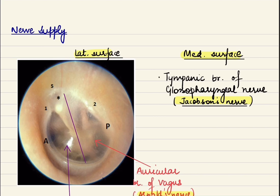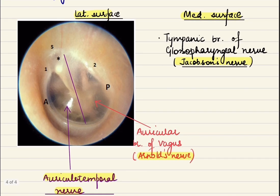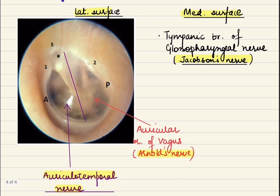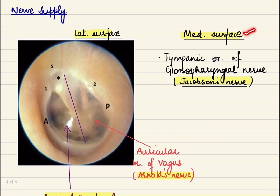Lastly, the nerve supply of the tympanic membrane. Both the lateral and medial surfaces have different nerve supplies. The lateral surface nerve supply is similar to the external auditory canal: the anterior part is supplied by the auriculotemporal nerve, a branch of the mandibular division of the trigeminal nerve, and the posterior part is supplied by the auricular branch of the vagus nerve, also known as Arnold's nerve or Alderman's nerve. The medial surface is supplied by the tympanic branch of the glossopharyngeal nerve, also known as Jacobson's nerve.